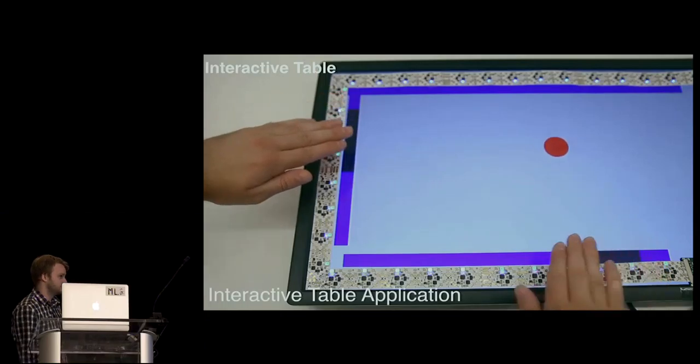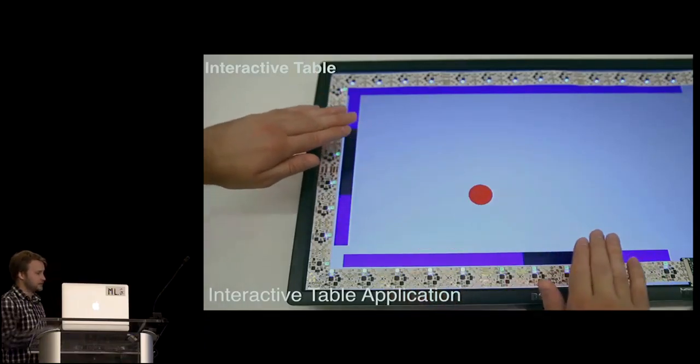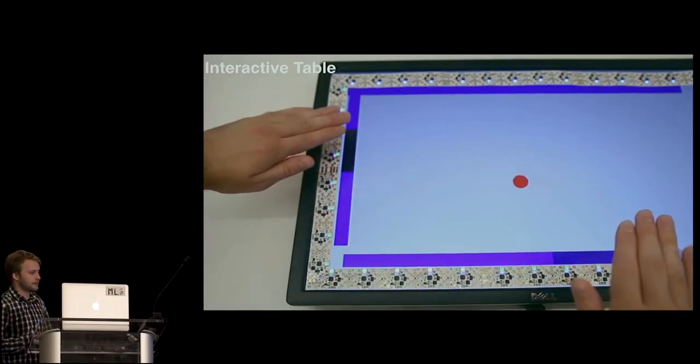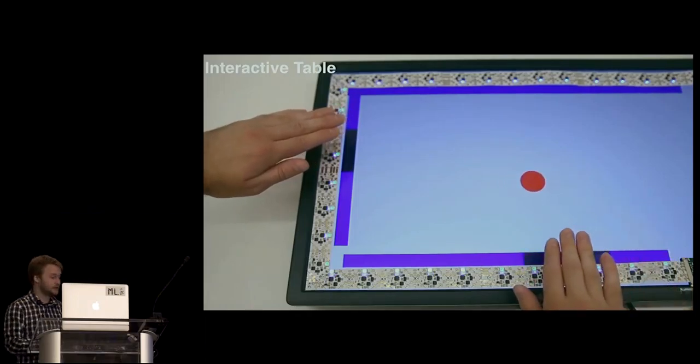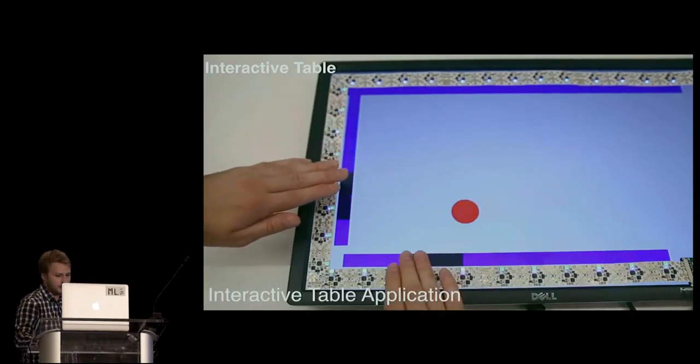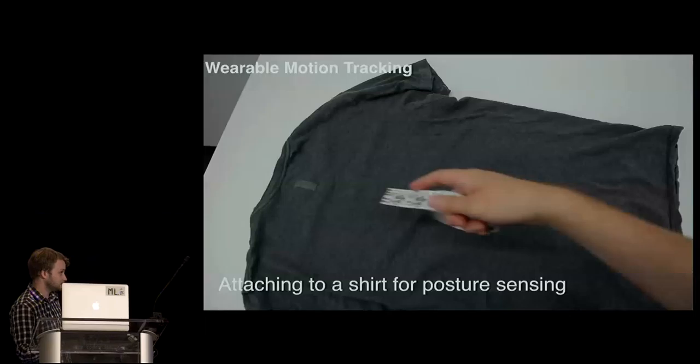We made an interactive table. So you taped it around the edge of the screen. And by moving the hands around using proximity sensors, you can control the cursor on the screen.